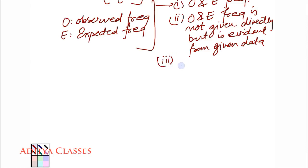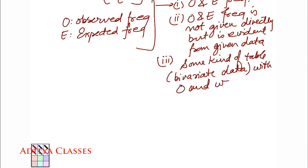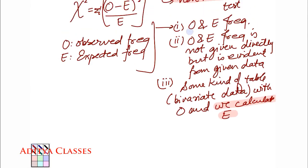Third one is where some kind of table is given. Now this table is for bivariate data of course. So we will be given some kind of table for that and from that table, table will be given with observed frequencies. And we calculate E. Now can you see the difference, first time we are calculating E? In first kind of questions, both were given. In second aspect of question, both were not given but they were evident.